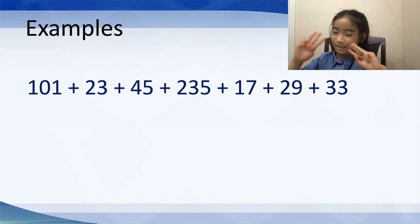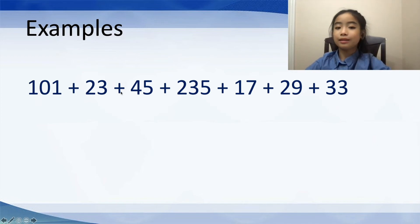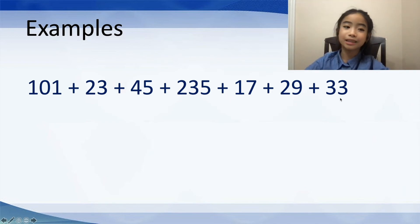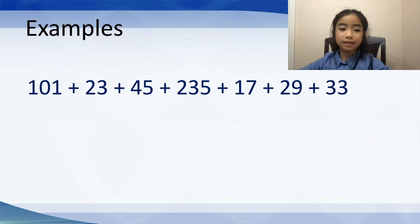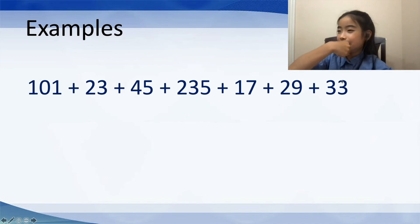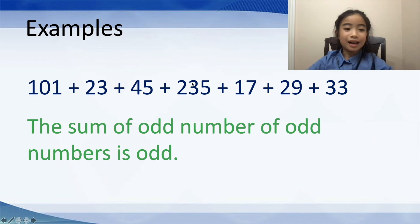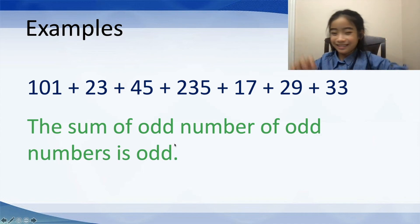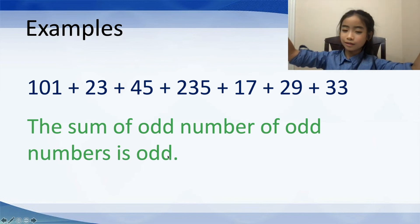Next, we have 101 plus 23 plus 45 plus 235 plus 17 plus 29 plus 33. They are still all odd numbers. Let's count: 1, 2, 3, 4, 5, 6, 7 — we have 7 odd numbers, which is an odd number of odd numbers. So the sum of an odd number of odd numbers is odd. The result is odd.